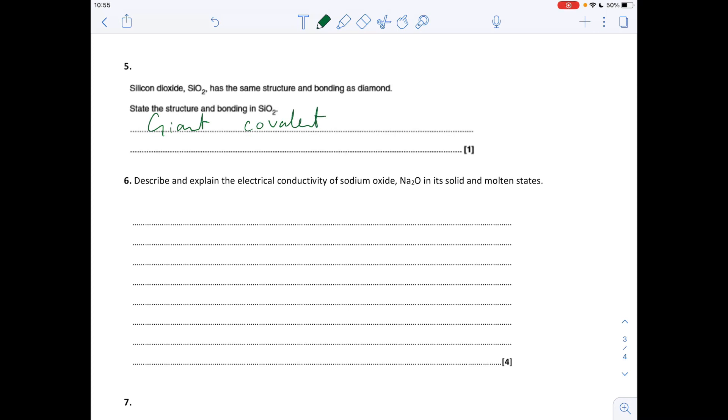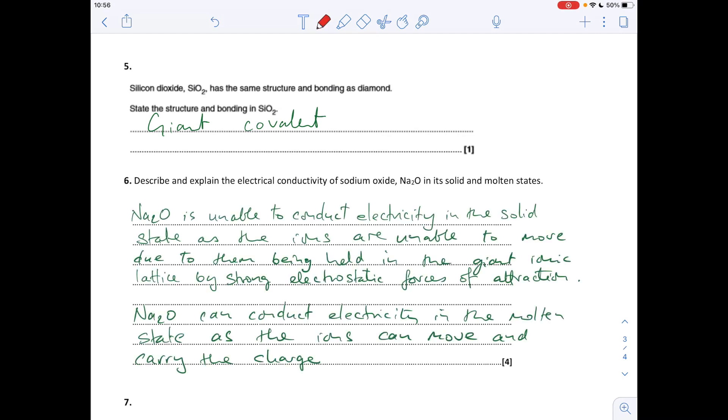Question six, describe and explain the electrical conductivity of sodium oxide in its solid and molten states. Basically, it can't conduct in the solid state because the ions are fixed in the lattice, held together by that electrostatic attraction between the oppositely charged ions, so they can't move in the solid state, so they can't conduct. As soon as you melt it, the ions can move so they can carry the charge. In terms of marks, the first mark would be that statement to enable to conduct in the solid state, and then the reason ions are unable to move. There's your two marks there, and then it can conduct in the molten state, so one mark for that and the ions can move.